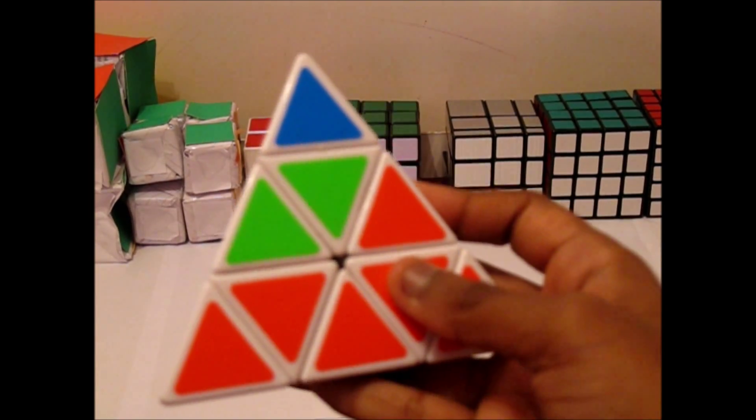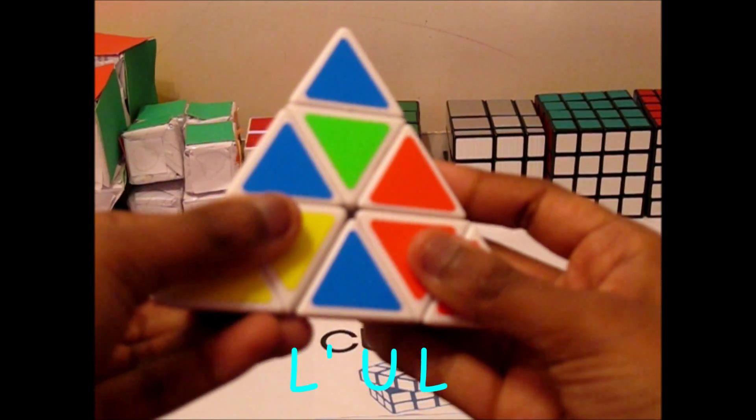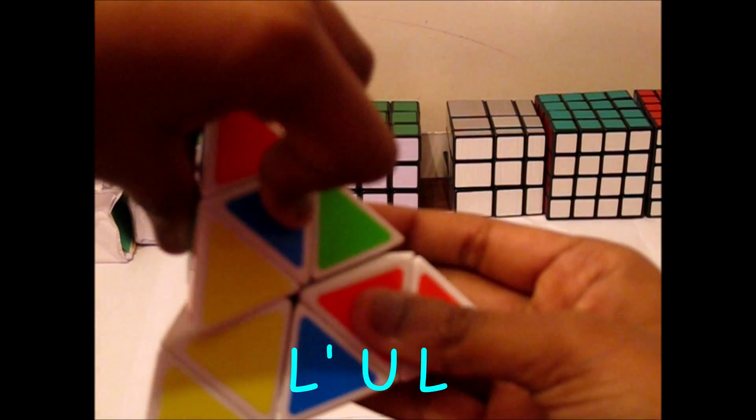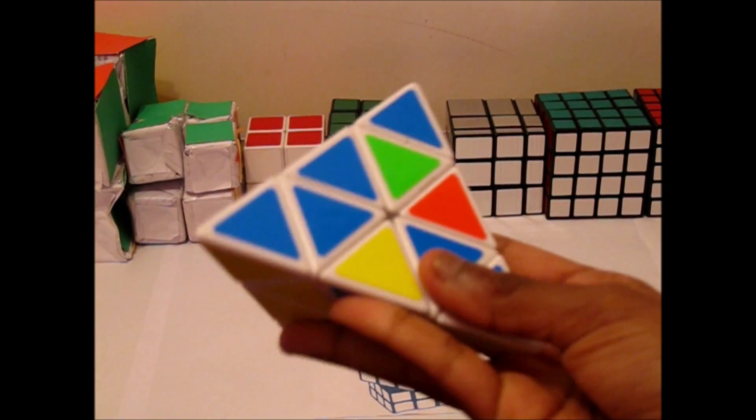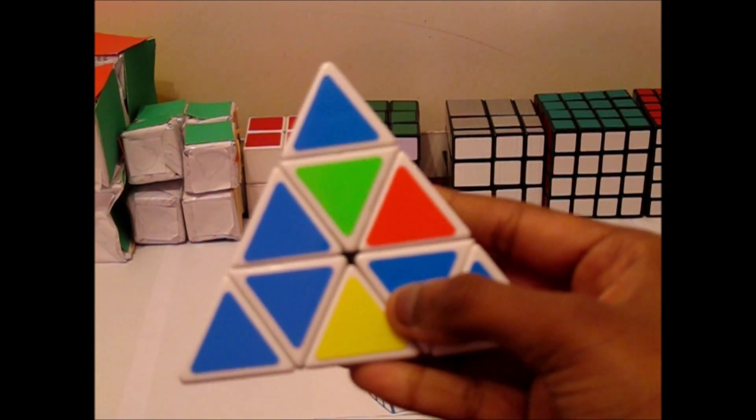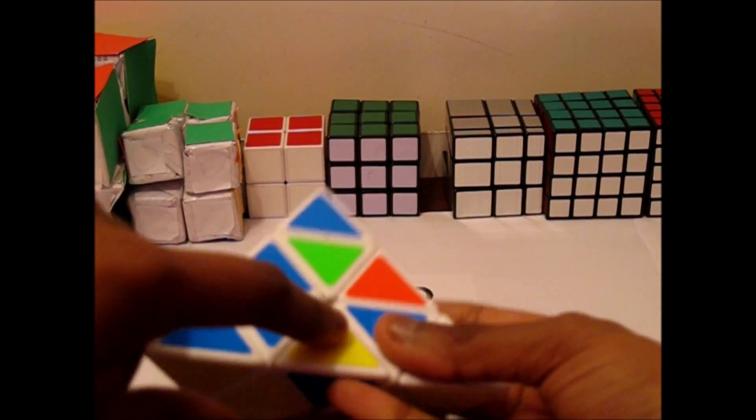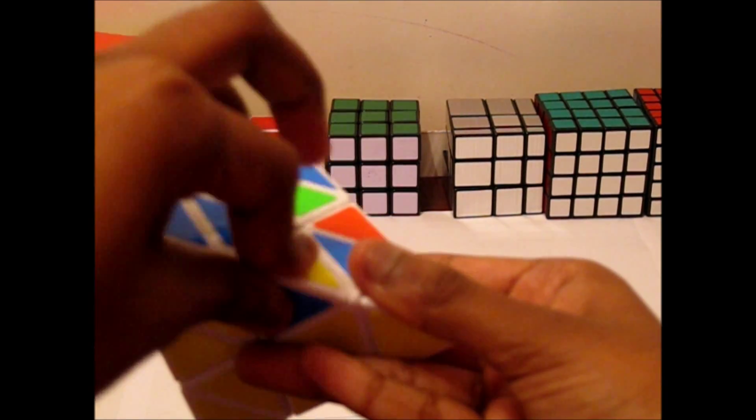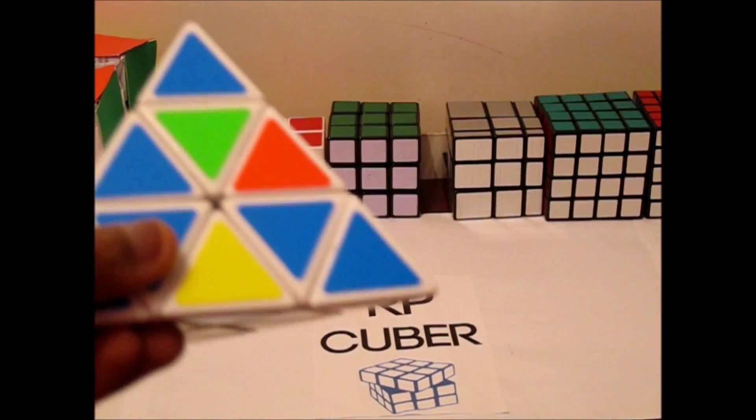And now we can do this one. So if you align this here, so it's facing on the right now. So when it's facing on the right, you need to do a similar algorithm, but it's the other version of it. So you have to do left counterclockwise, up counterclockwise and left. So it places it in for you.